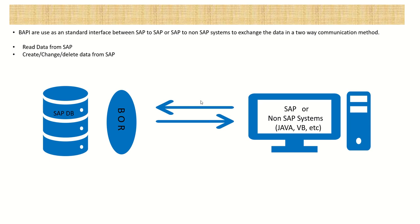From a non-SAP system, there are some connectors like Java Connector, PHP Connector, VB Connector - by making use of those we can directly access the BAPI. Also from PI/PO and CPI there are BAPI RFC adapters using which we can access the BAPI.